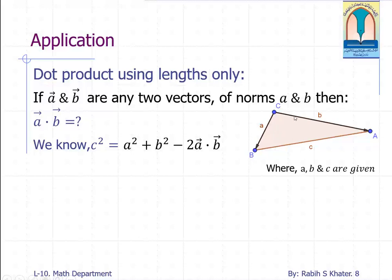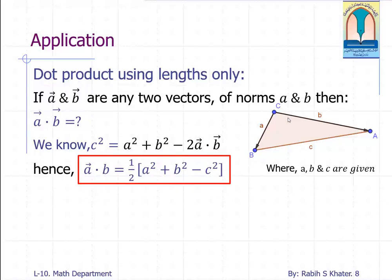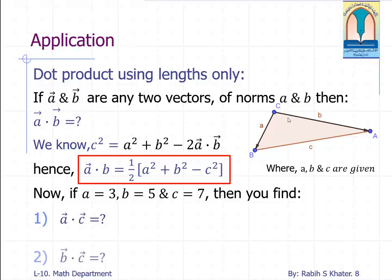Manipulating this formula we'll get a vector dot b vector equals... Now you try it if you have the measure of the sides. Try with a dot c, b dot c.